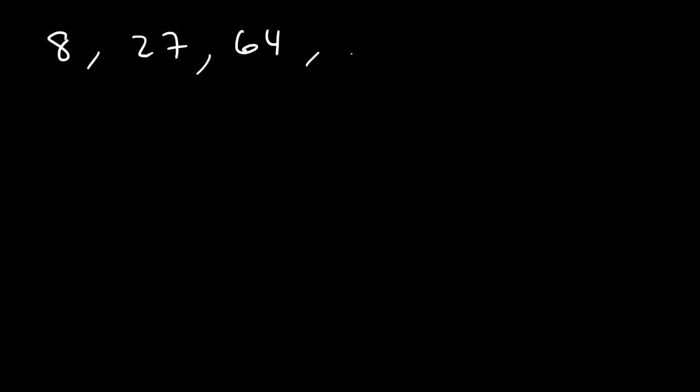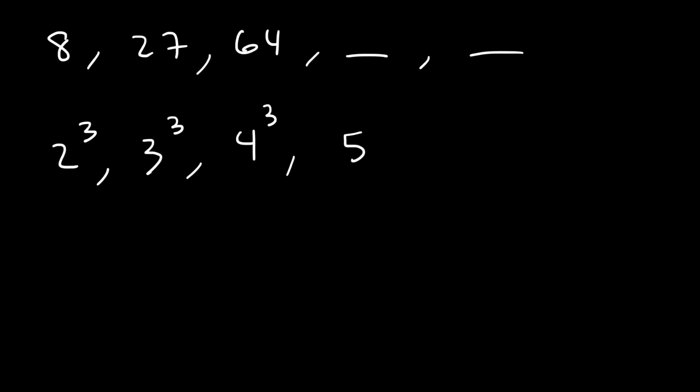Now find the missing numbers in the next pattern. 8 is the same as 2 to the third. 2 times 2 times 2 is 8. 27 is 3 to the third. 4 to the third, or 4 times 4 times 4, that's 64. Therefore the next number in the sequence has to be 5 to the third, which is 125. And then 6 cubed, which is 216. And the next one will be 7 to the third, and so forth.